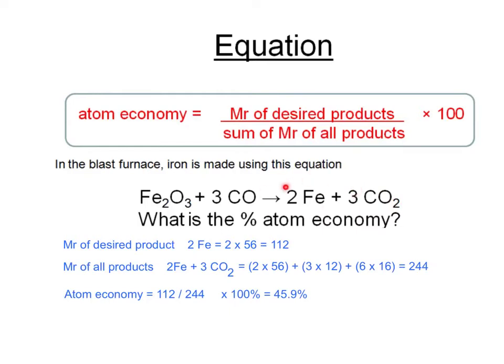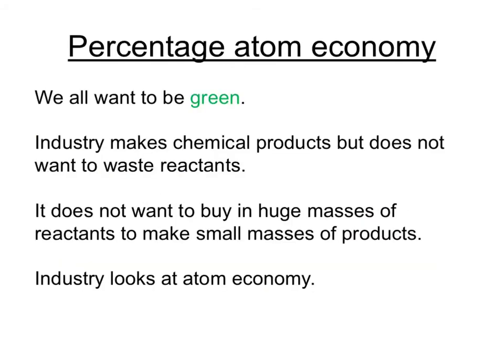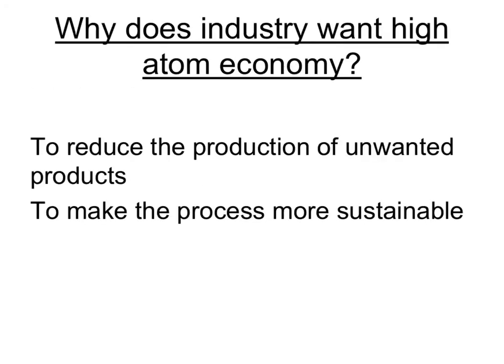Only 45.9% of the products are actually the desired product of iron. The importance of having a high percentage atom economy is that we want green, sustainable processes. Industry wants to make chemical products but doesn't want to make additional unwanted products, and doesn't want to buy in huge masses of reactants to make small masses of products. A high atom economy reduces the production of unwanted products and makes the process much more sustainable.